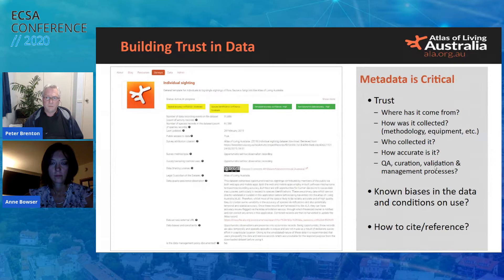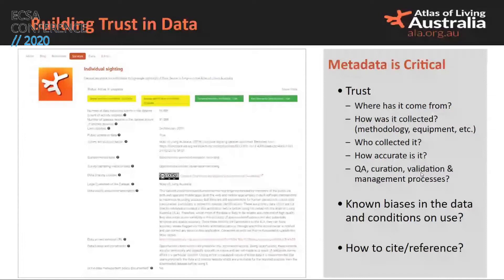This has bearing on the perceptions of trust. Downstream users will make decisions about whether they trust the data for the purpose they're putting it to, based on how well it's described across those various factors. The sorts of things researchers look for: where does it come from, how is it collected, who collected it, how accurate is it, what sort of curation and validation methods have been applied, what sort of biases are there, conditions on use, and how to cite and reference it.